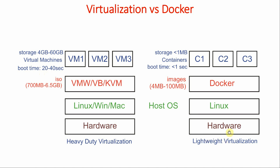On the other hand, in lightweight virtualization, the preferred host OS should be Linux — although you can install Docker on Windows or Mac, Linux is most recommended. On that we install Docker and create containers. For creating containers we need Docker images. Remember, 95% of images have a size between 4 MB to 100 MB — so the image size is very small compared to ISO size, storage requirements are very less, and creating containers hardly takes seconds.